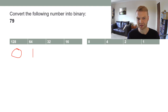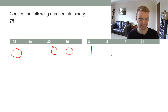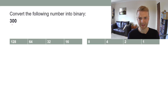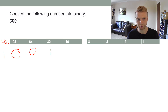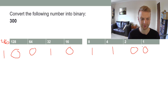We've got 15 remaining. Does 32 fit into 15? No. Does 16 fit into 15? No. Does 8 fit into 15? Yes, so 15 minus 8 is 7. You can do this on a calculator — just keep subtracting. Does 4 fit into 7? Yes, leaving 3, which means 2 and 1. That's the binary number for 79. You can go beyond 255 — the max for 8 bits — by adding columns: 256, 512, 1024, and so on.